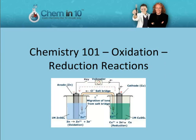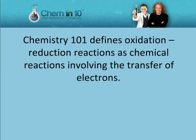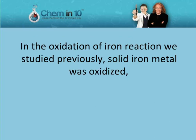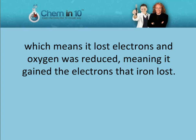Chemistry 101, Oxidation Reduction Reactions. Chemistry 101 defines oxidation reduction reactions as chemical reactions involving the transfer of electrons. In the oxidation of iron reaction we studied previously, solid iron metal was oxidized, which means it lost electrons, and oxygen was reduced, meaning it gained the electrons that iron lost.